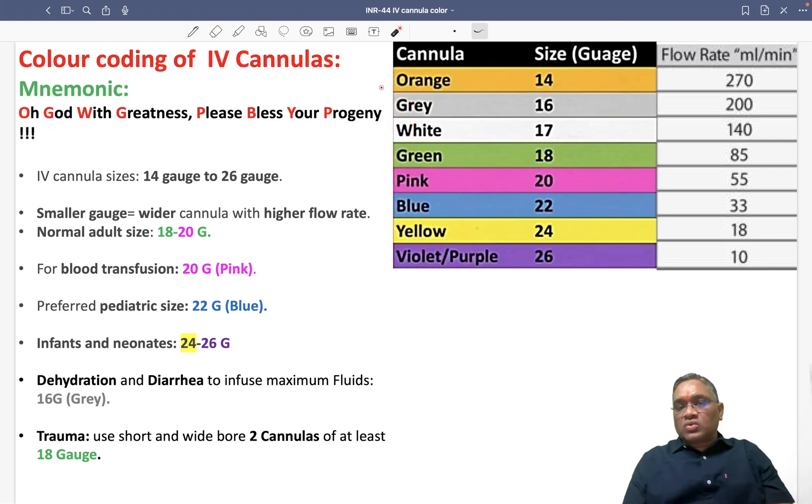Oh God means O is for orange, G is gray, W is white, then greatness is green, please is pink, bless is blue, your is yellow, and progeny is purple or violet color.